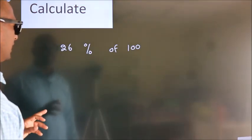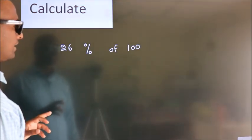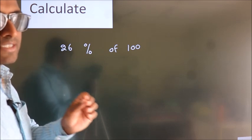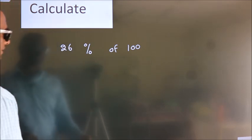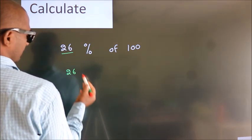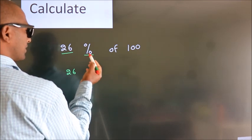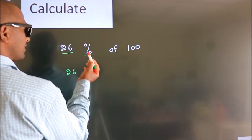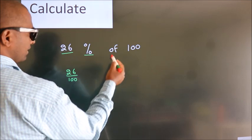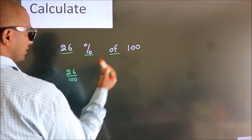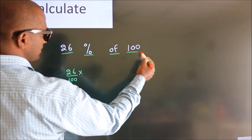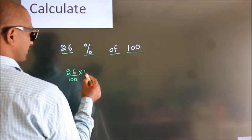Calculate 26% of 100. How do we calculate? This number as it is, you write. In place of the percentage sign, we divide by 100. In place of the word 'of', we multiply (into). This number as it is.